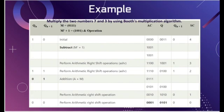Combining the AC and Q values, we get the final answer: 7 × 3 equals 21. In binary this is 00010101. Verifying: 1×2⁰ + 0×2¹ + 1×2² + 0×2³ + 1×2⁴ = 1 + 0 + 4 + 0 + 16 = 21. So the final answer is 21.